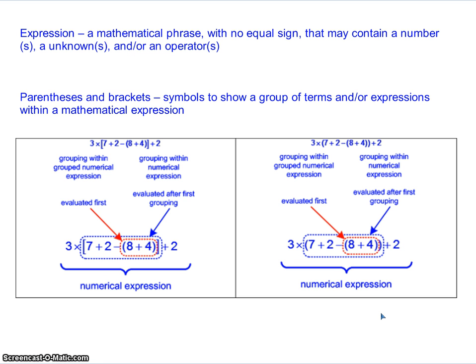For example, here you have 3 times open bracket, 7 plus 2, minus open parentheses, 8 plus 4, close parentheses, close bracket, plus 2. That's a rather lengthy expression, but that is an example of an expression, because you have numbers and operators.